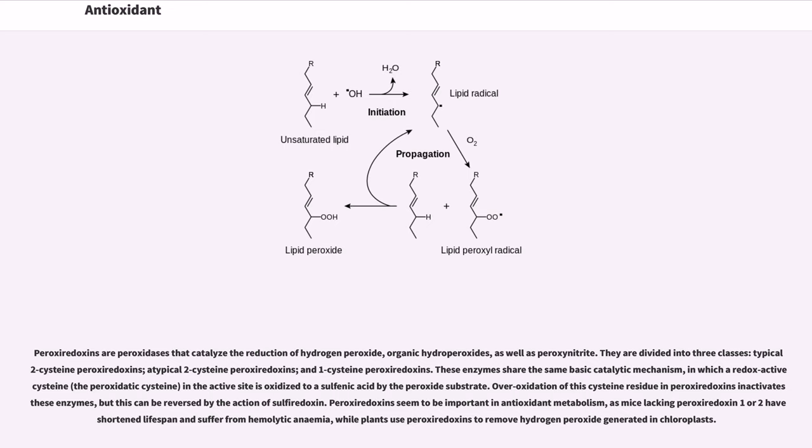Peroxiredoxins seem to be important in antioxidant metabolism, as mice lacking peroxiredoxin 1 or 2 have shortened lifespan and suffer from hemolytic anemia, while plants use peroxiredoxins to remove hydrogen peroxide generated in chloroplasts.